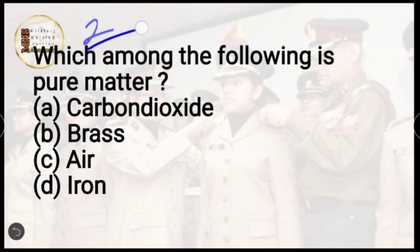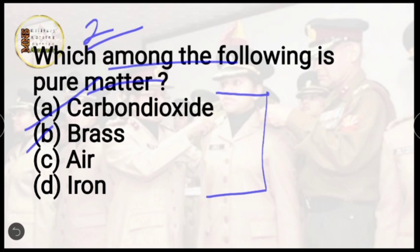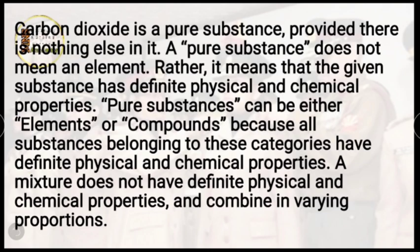Question number 2: which among the following is a pure matter? Options are carbon dioxide, brass, air, or iron. I hope you are attempting with me. The correct answer is option A, carbon dioxide. Pure matter depends on its physical and chemical composition.